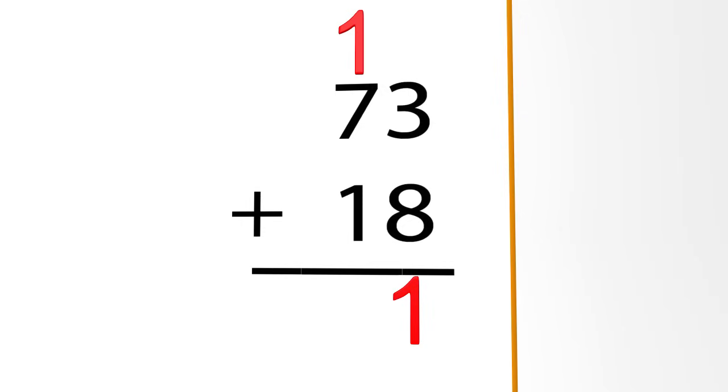We have finished adding the ones column, so now we add everything in the tens column. We get 1 plus 7 plus 1. What does that equal? We get 9. Great job! 1 plus 7 is 8, and 8 plus 1 is 9.